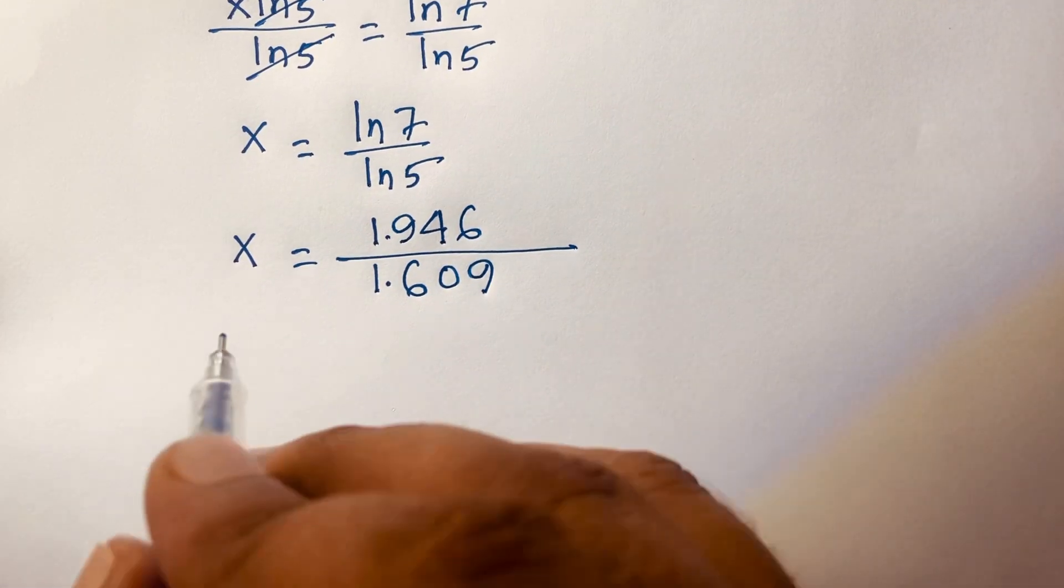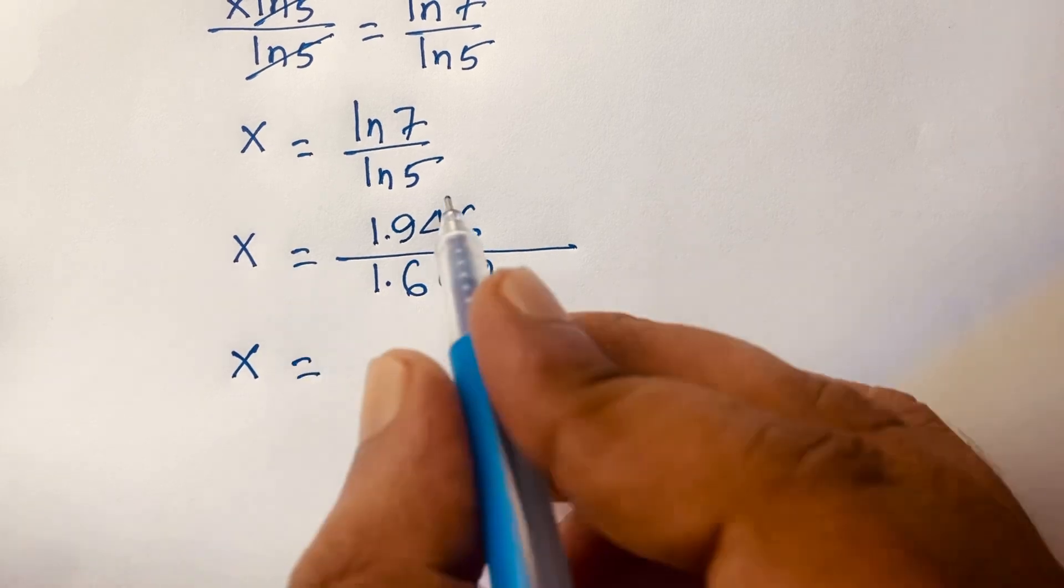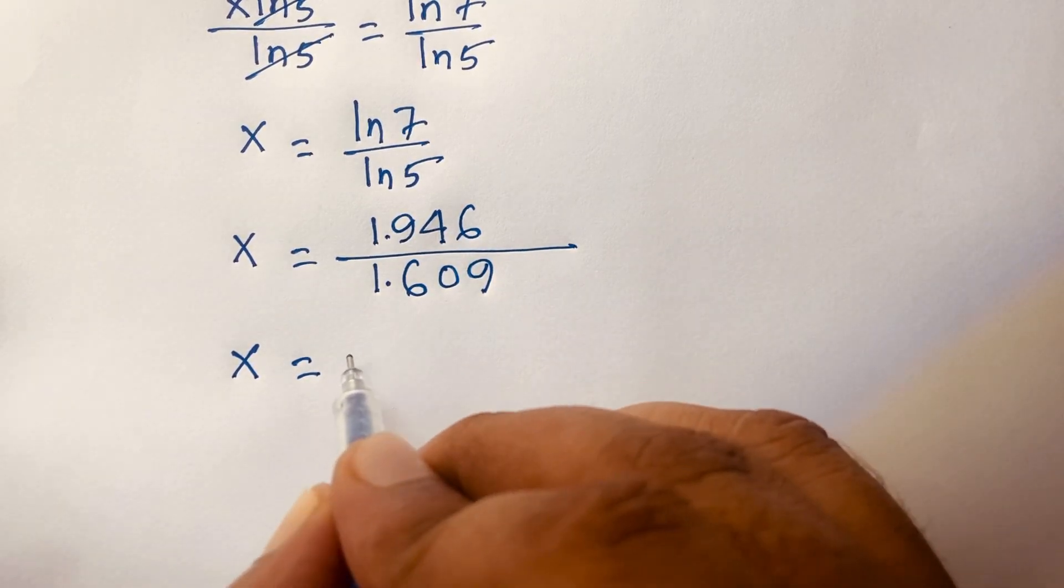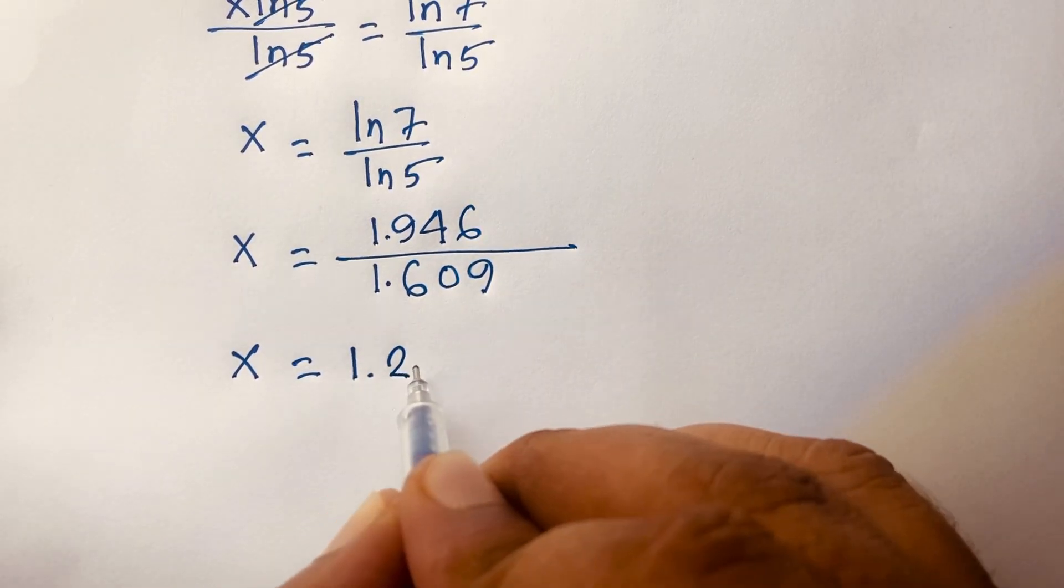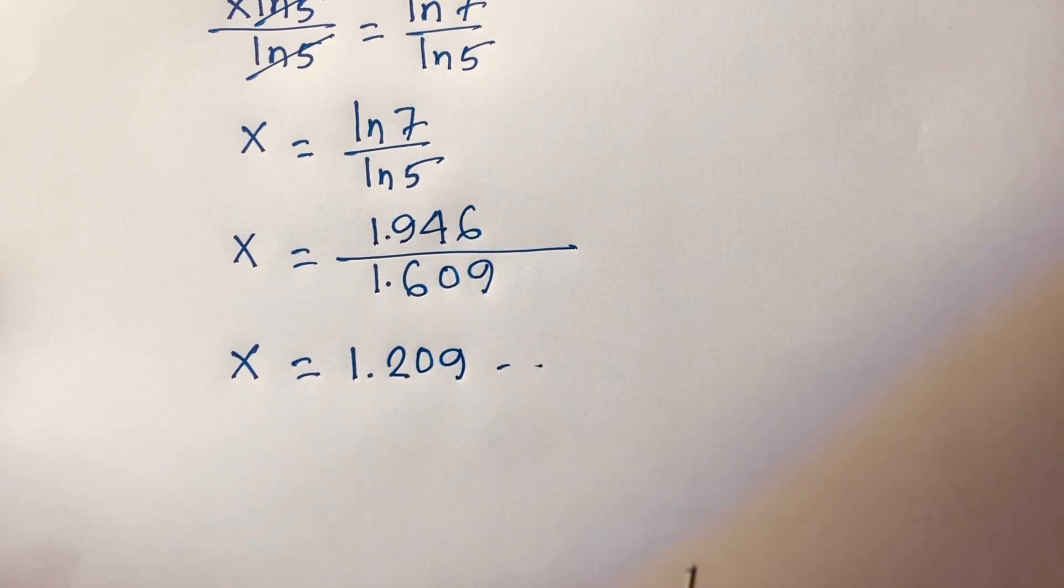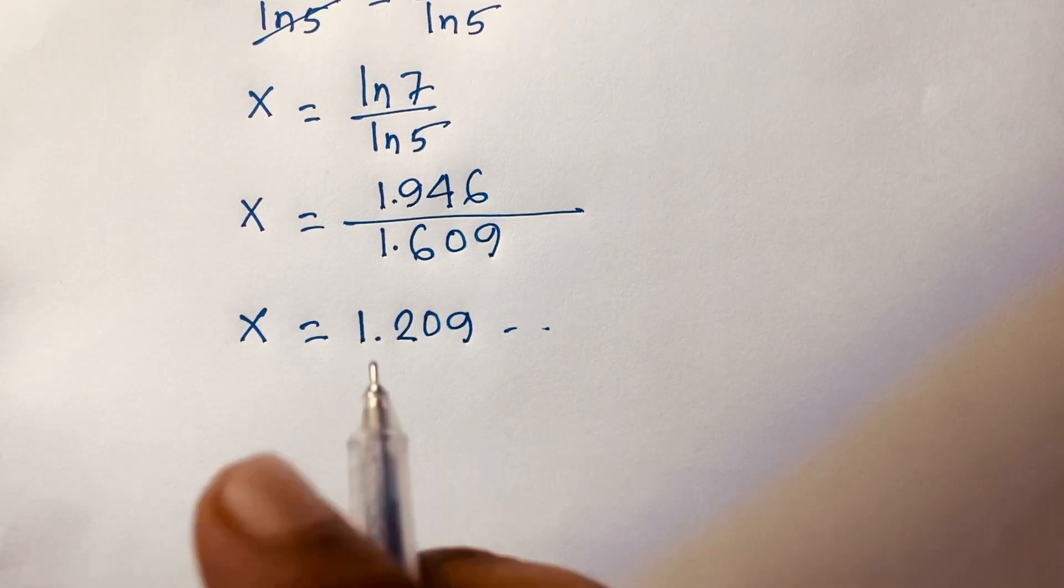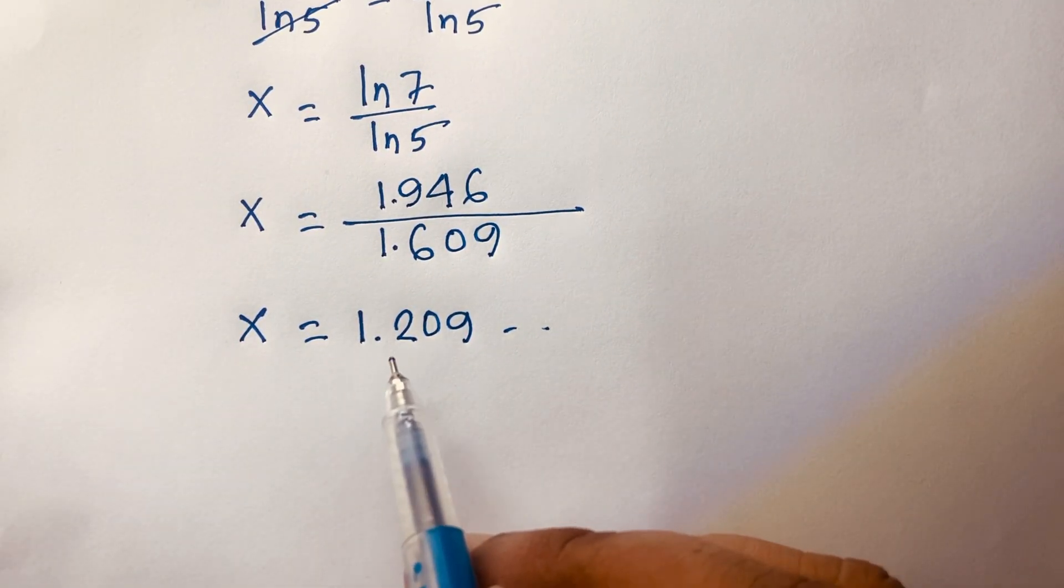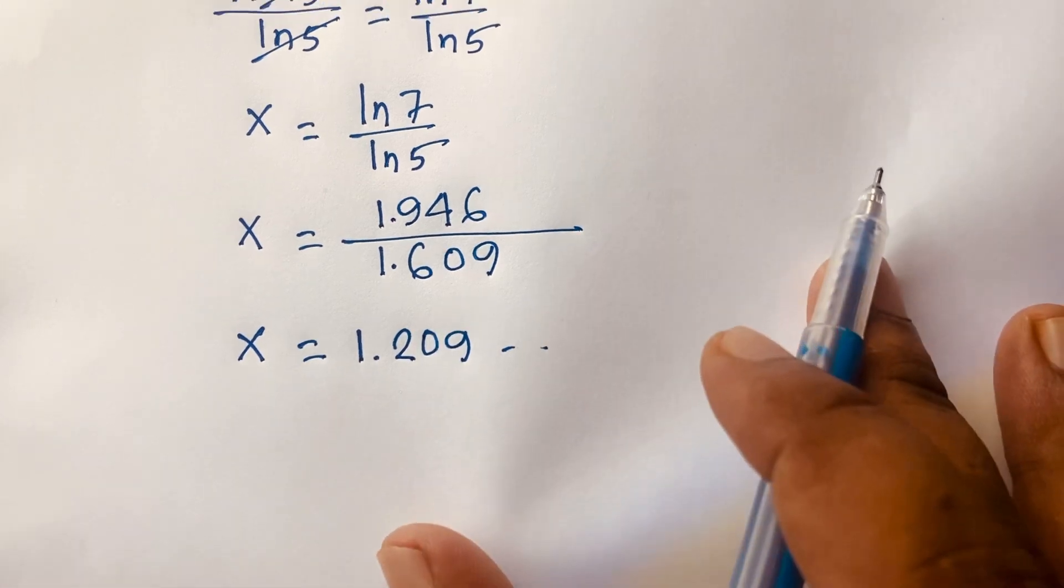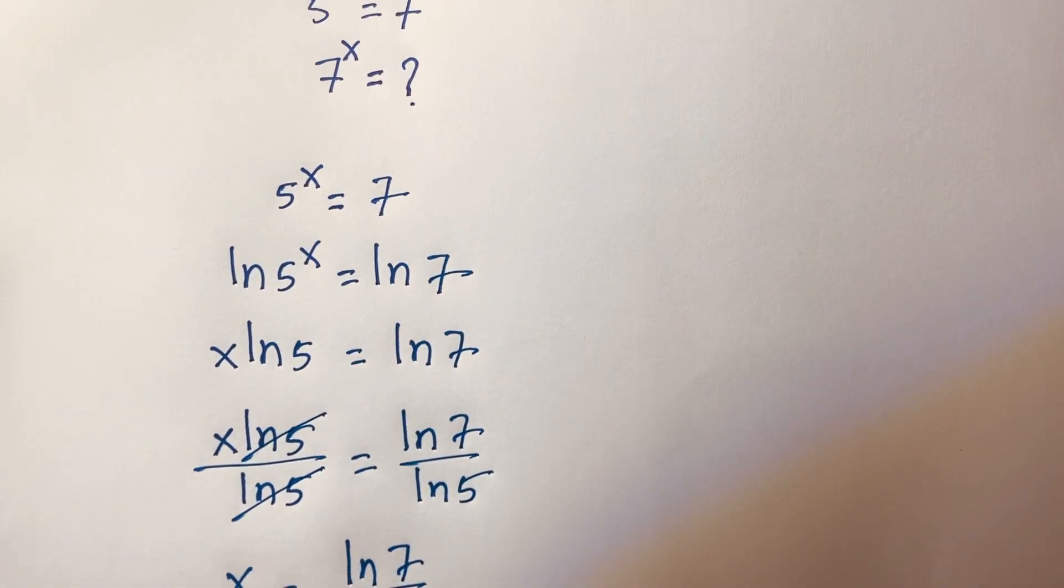Then I can say x is equal to this divided by this, it will be 1.209. So the final value of x is equal to 1.209. But our question is 7 to the power x is equal to what.